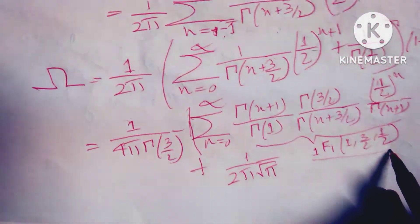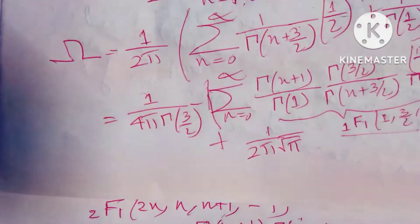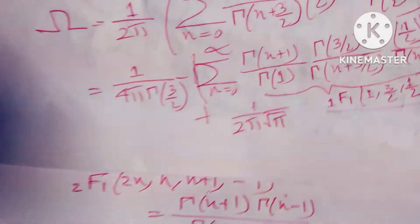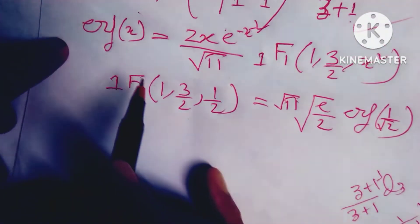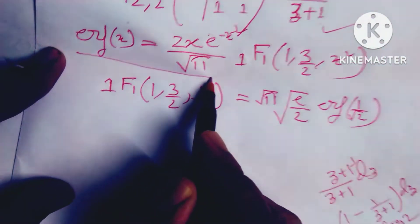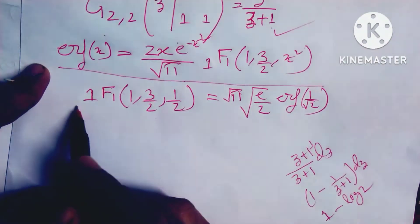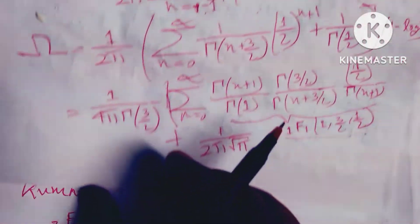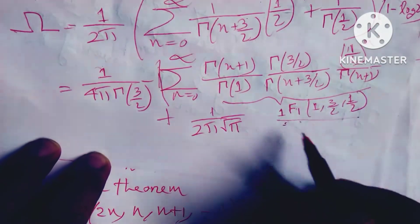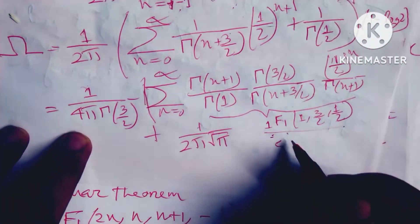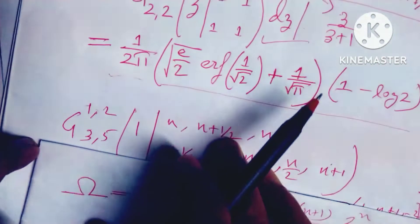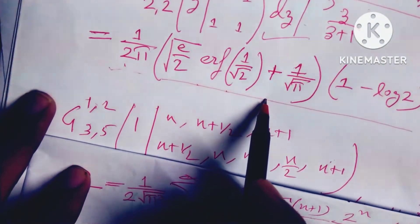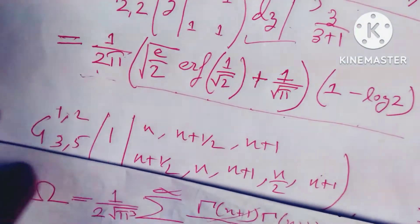This equals n equals 0 to infinity, gamma(n+1), this formula equals to ₁F₁(1; 3/2; -1/2), because of the hyperbolic function, and 2pi divided by 2pi. Now friends, we know that the erf(x) equation is equal to 2x times e to the power minus x squared, equals ₁F₁(1; 3/2), equals half, and root over pi equals root over e by 2, and erfc(1 by root 2). So this is my error function formula. So I get the equation: if I put this value, I get 1 by 2pi times root over (e/2) times erfc(1 by root over pi), times 1 minus log 2. Thanks for watching.